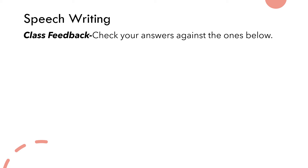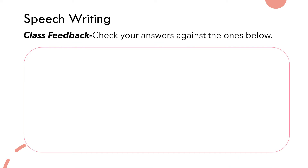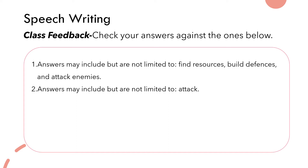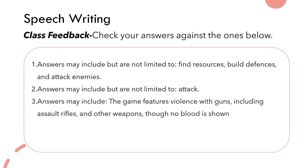Class feedback — check your answers against the ones below. For the first question, we needed to think about three things that can be done in the game. Answers may include but are not limited to: find resources, build defences, and attack enemies. Number two asked us to select a quote or keyword showing the game is aggressive — answers may include but are not limited to words like 'attack', which carries a lot of negative connotations. Number three: an example of an asyndetic list could include 'the game features violence with guns including assault rifles and other weapons, though no blood is shown.'